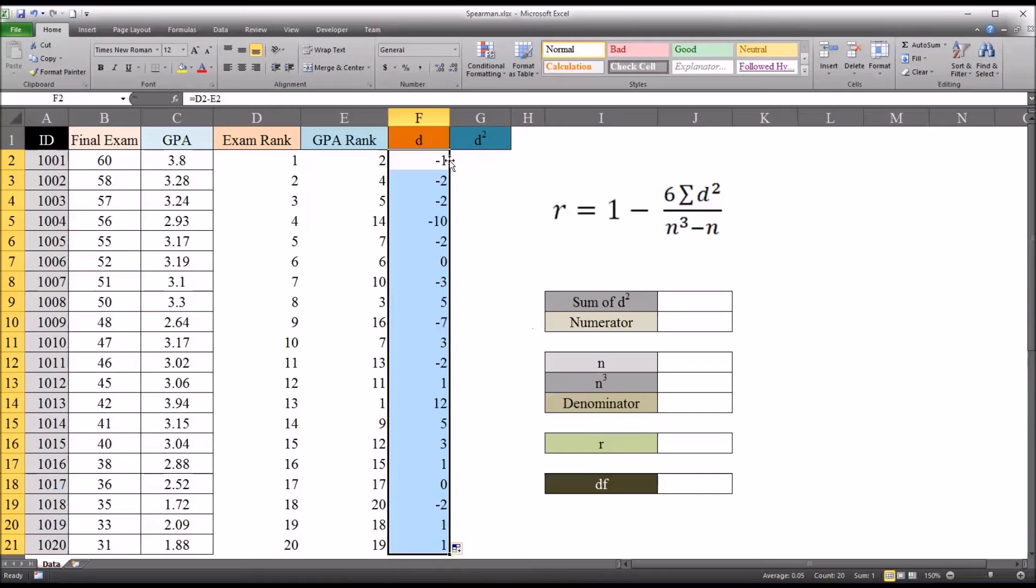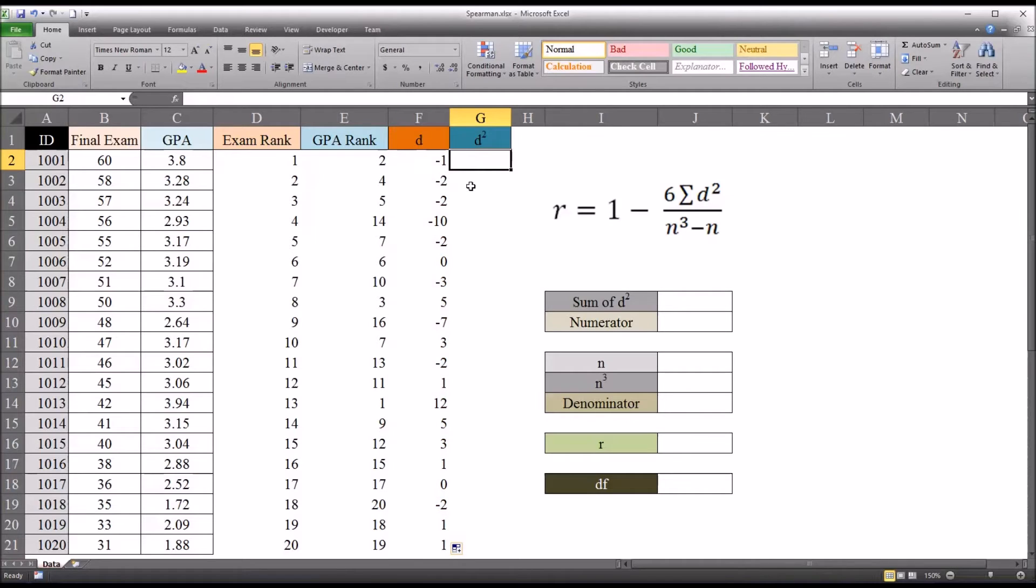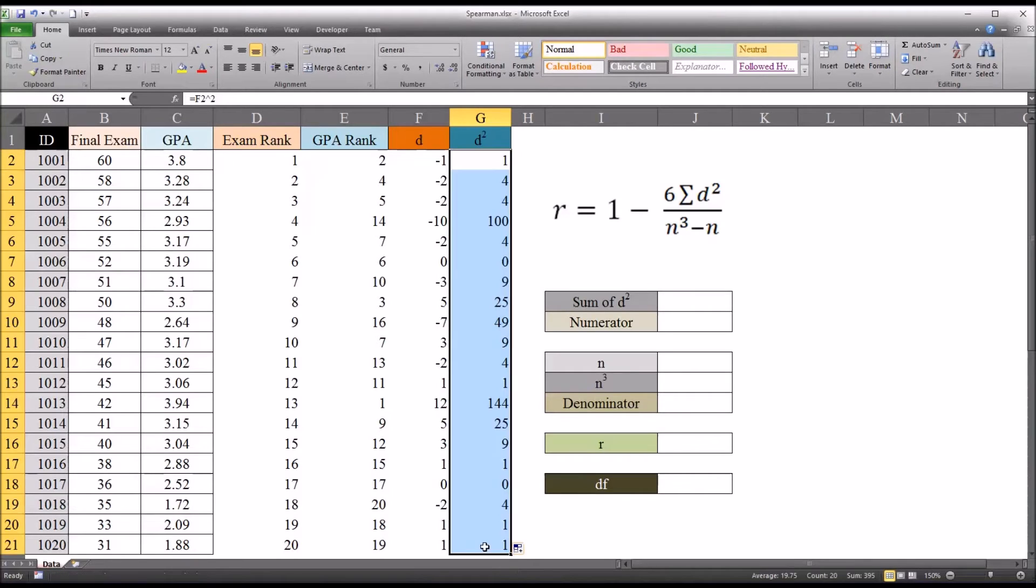And then we want to square D. And there's a few ways we can do this, but I'm just going to take the value of F2, and then it's shift 6, which is the caret symbol. So F2, caret, and then 2. So F2 raised to the power of 2, or squared. And we want to autofill that all the way down. So now we have all the squares of the differences.